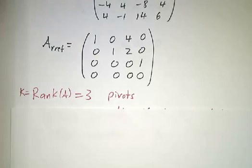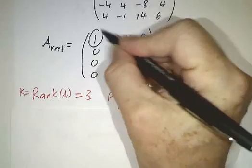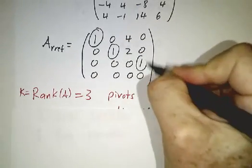And you see we have three pivots. The rank, which we usually use the letter k to denote the rank, is the number of pivots. There's a pivot, there's a pivot, there's a pivot.